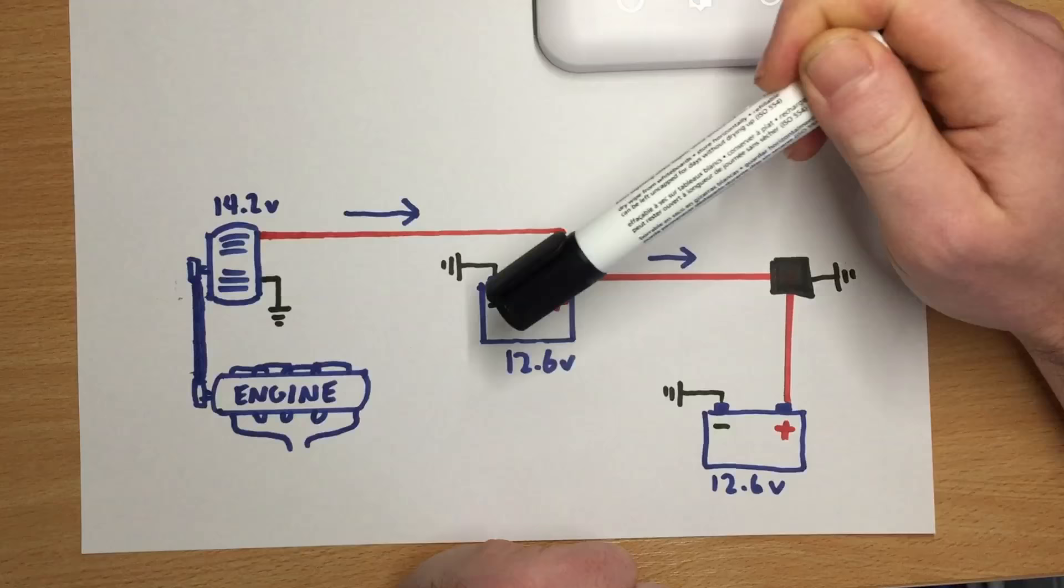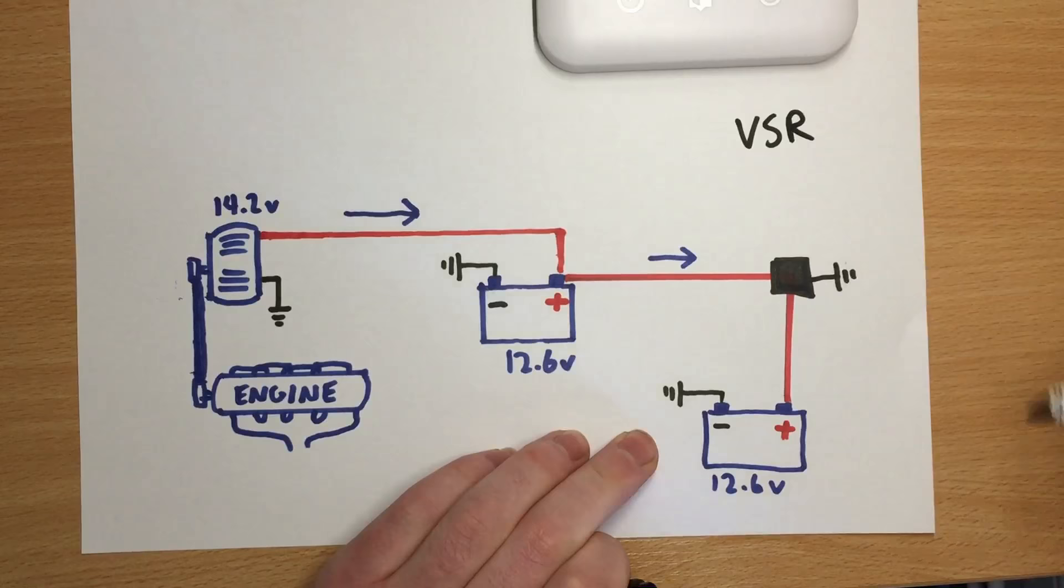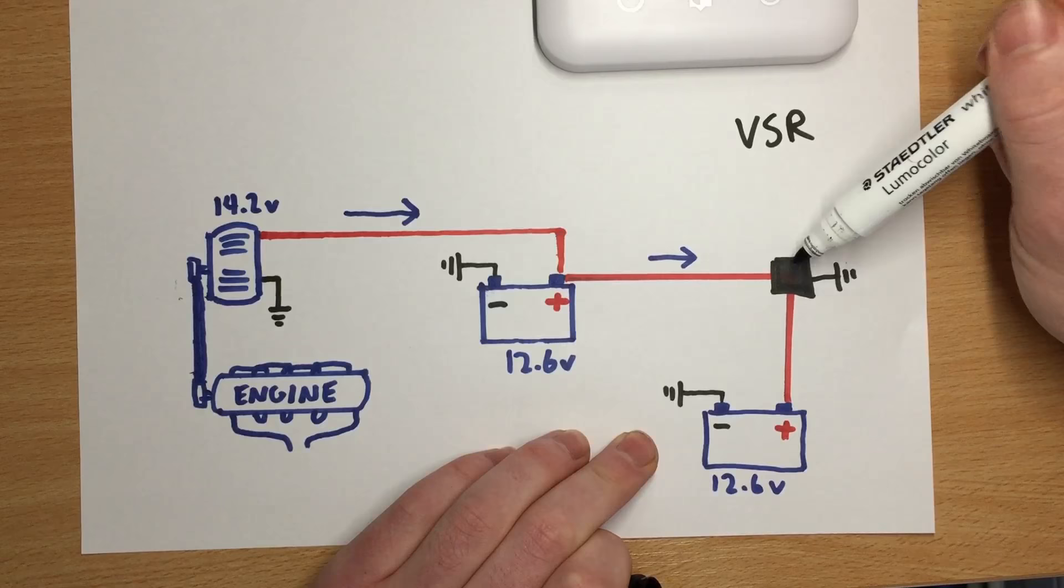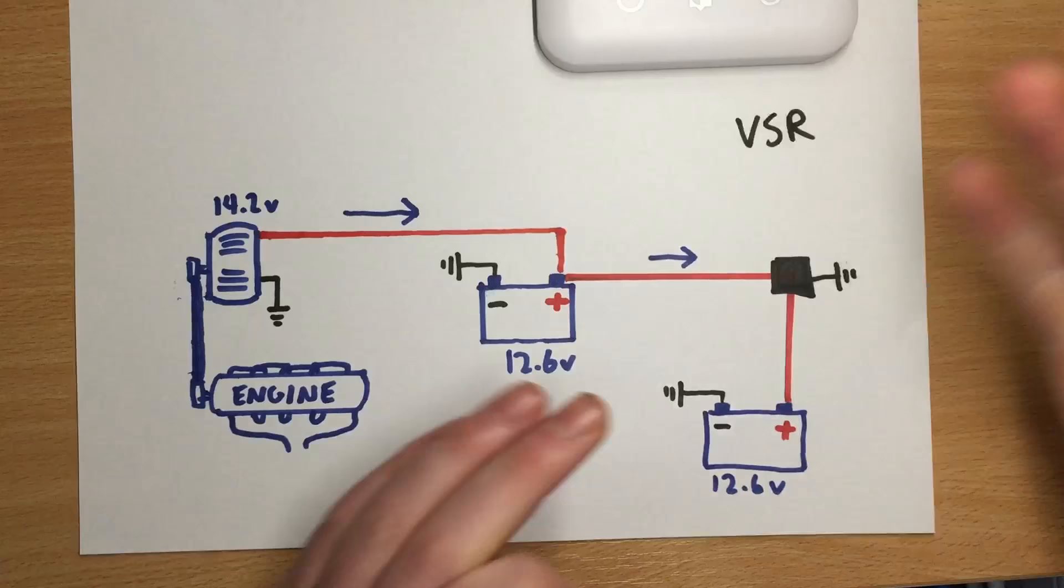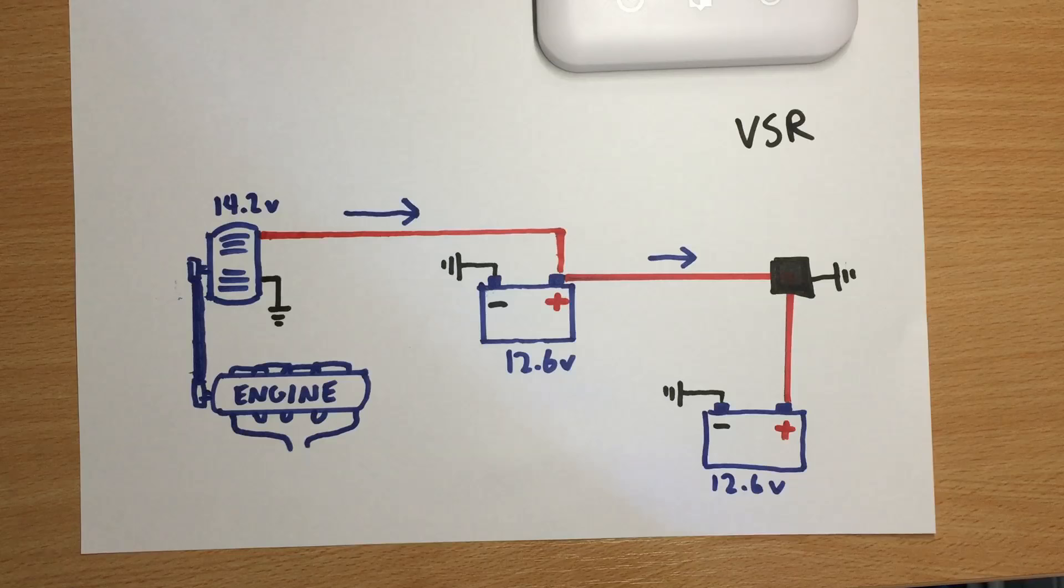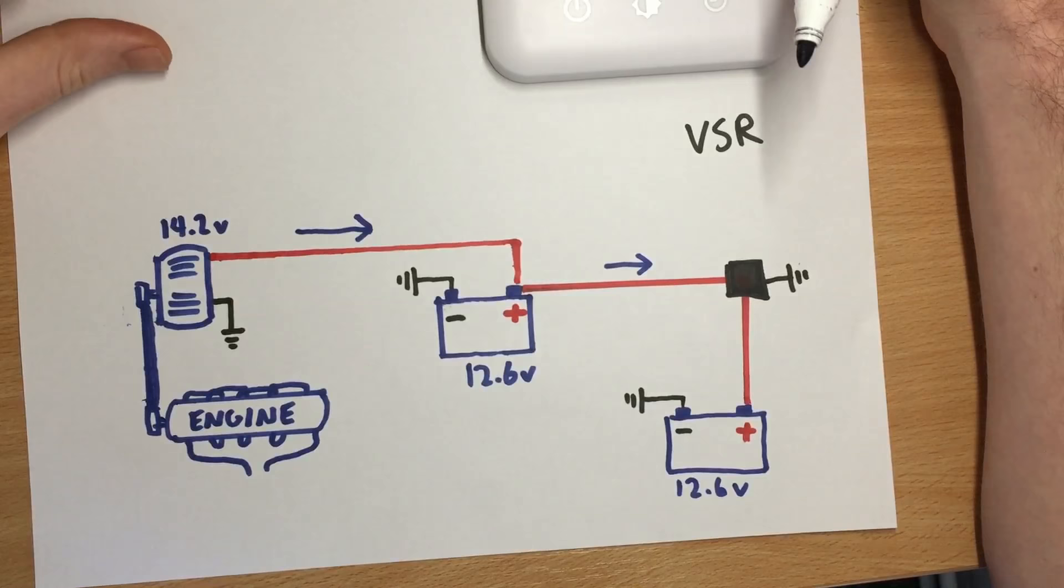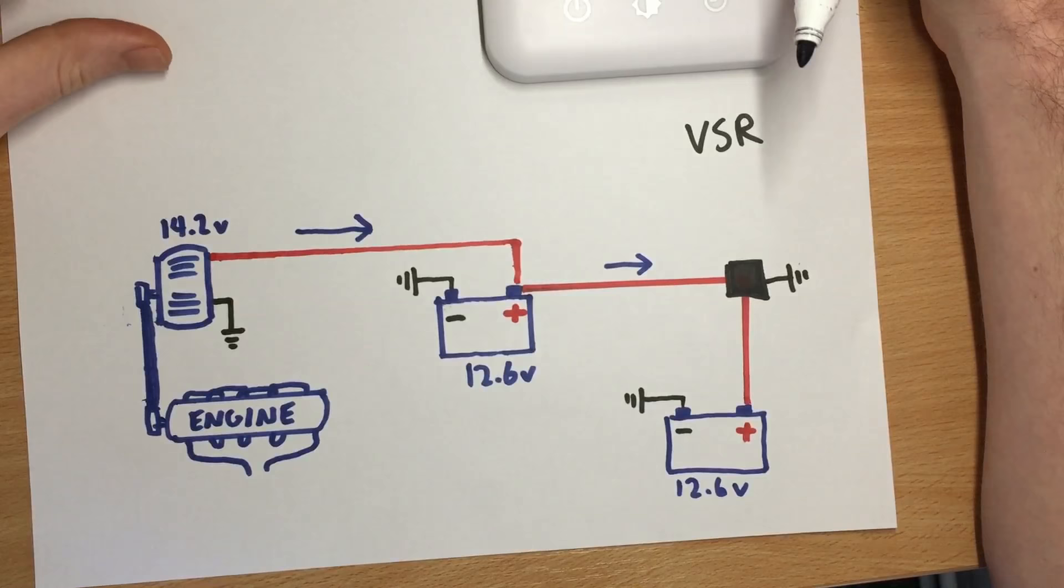That's a voltage sensing relay. You also get other types of split charge relays, such as ones that are connected to your ignition by a wire so it just knows when your key is turned. It's worth looking into them but I would recommend the voltage sense relay. They're very cheap. That's what I've been using for the past two or three years. I'd recommend going online, having a look around looking at different types of split charge relay kits. It's a good place to start.